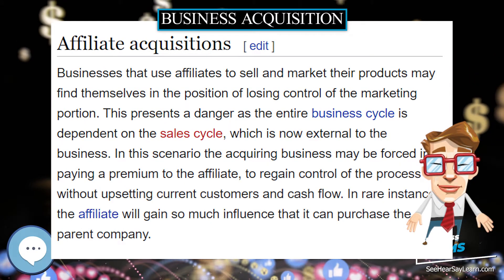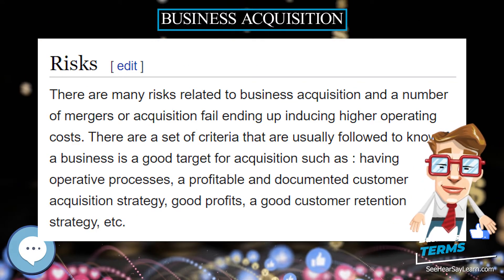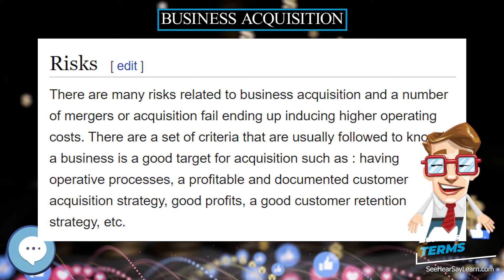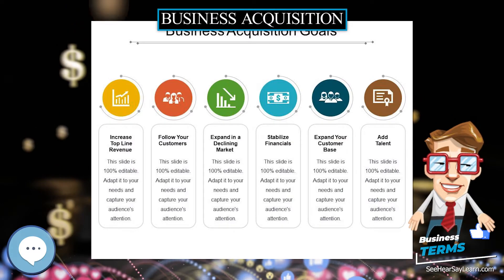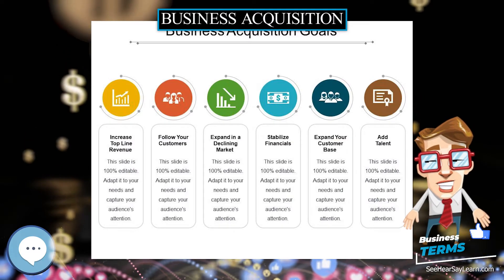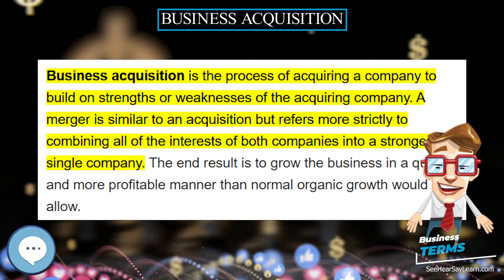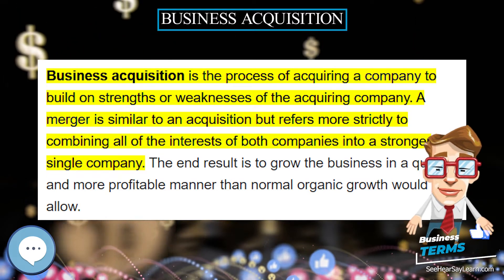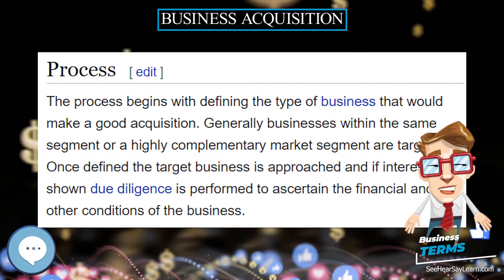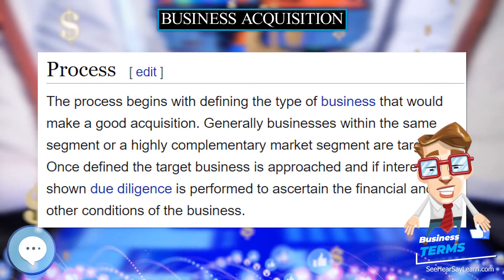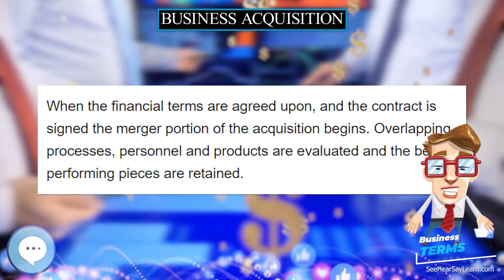The process begins with defining the type of business that would make a good acquisition. Generally, businesses within the same segment or a highly complementary market segment are targeted. Once defined, the target business is approached, and if interest is shown, due diligence is performed to ascertain the financial and other conditions of the business.